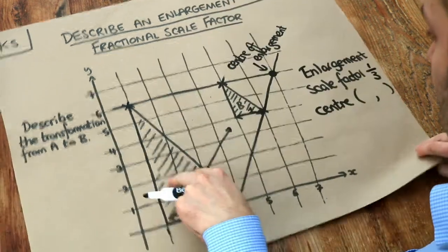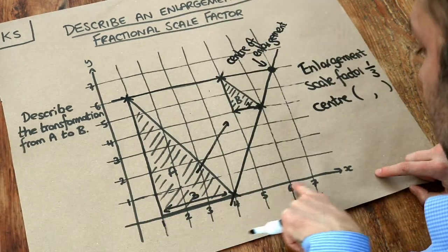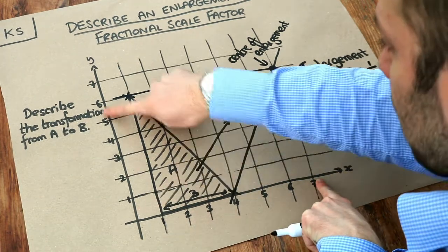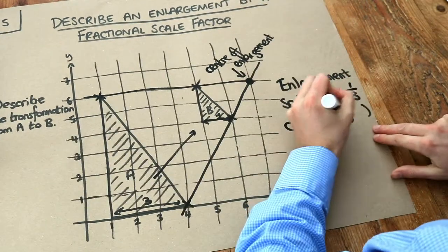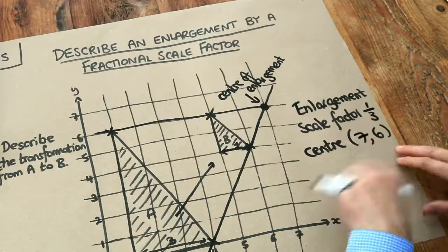And let's just read off the coordinate of that. Well along the x-axis we can see it's 7, and up the y-axis we can see it's 6. So the coordinate is 7, 6, and that is the final answer.